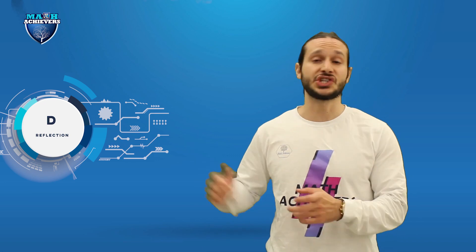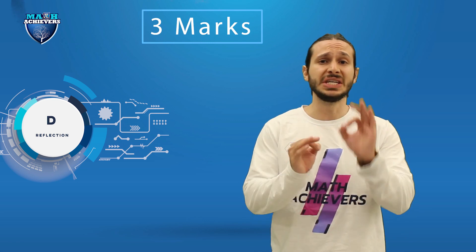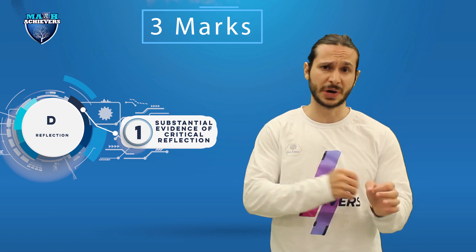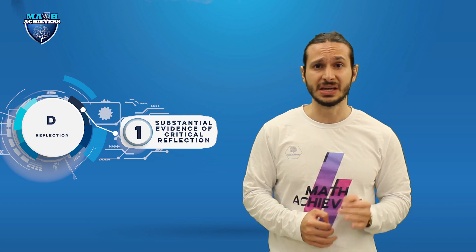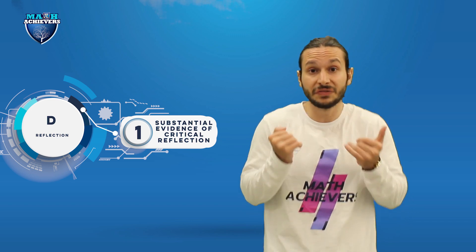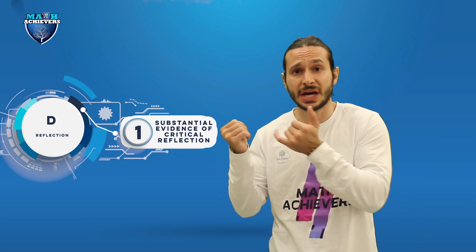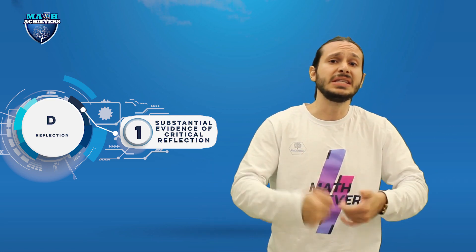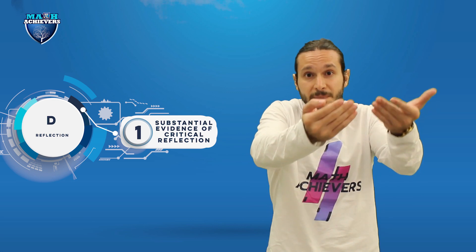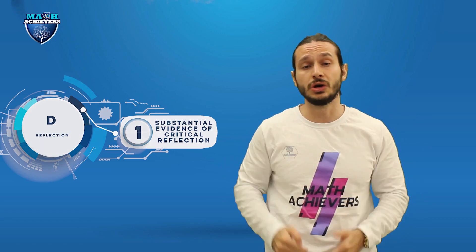Criterion D: reflection. The highest possible marks for this criterion is three marks. To achieve these three marks, there must be substantial evidence of critical reflection in your project. You have to keep reflecting throughout the whole project. If you carry out step number one, you have to reflect on that step — does this solve my problem? Is the math I used correct? Does it give me the needed results? Based on this reflection, you carry out step number two, and you keep carrying on in this reflection process across the whole project until you solve your problem.